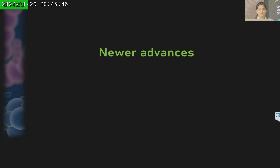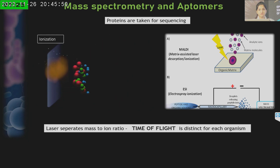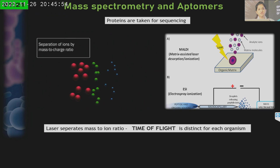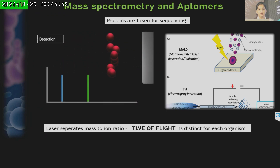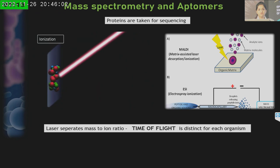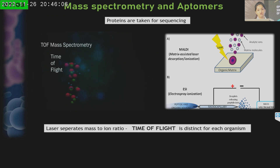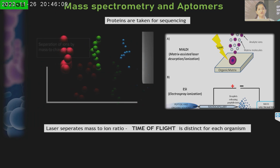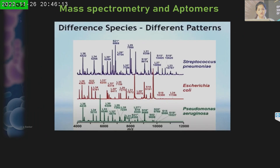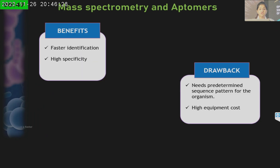Some newer advances — instead of DNA, protein samples are taken for sequencing. This is called MALDI, or matrix-assisted laser desorption ionization time-of-flight (MALDI-TOF). In this technique, protein molecules are broken down by a laser, causing them to undergo ionization into ions. The time of flight of these ions is registered, and the pattern is different for every bacterium. Pre-existing documented records of bacterial patterns are used as reference. When MALDI-TOF is performed, if the pattern matches, the bacterium can be identified. The benefits are faster identification and higher specificity, but the drawbacks are the inability to identify unknown pathogens without prior pattern documentation and the high equipment cost.